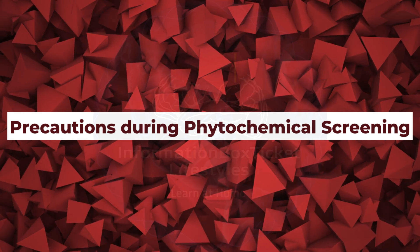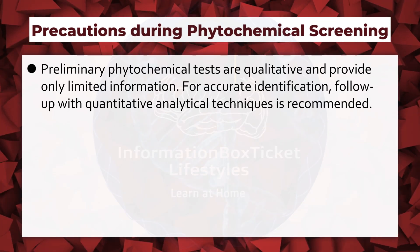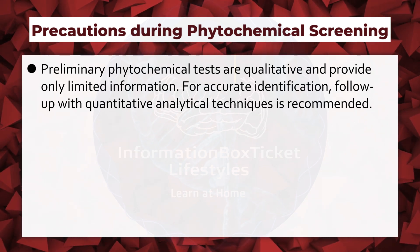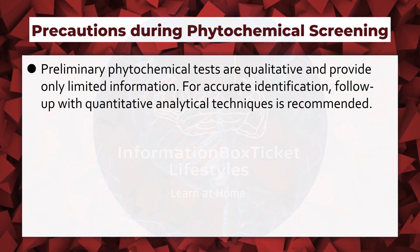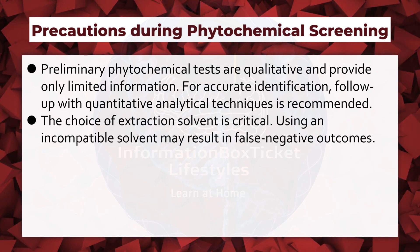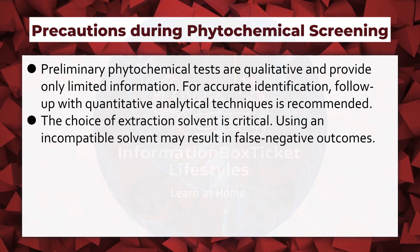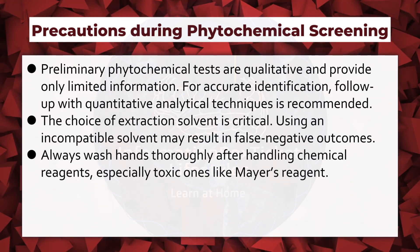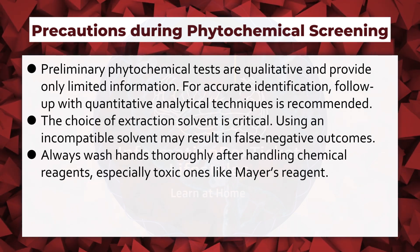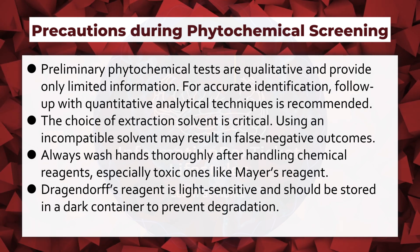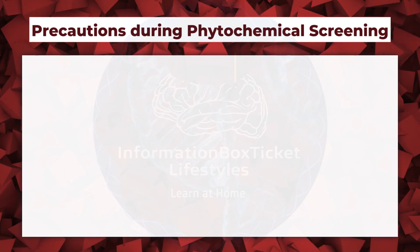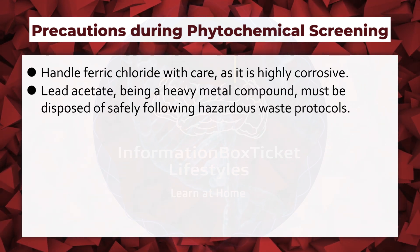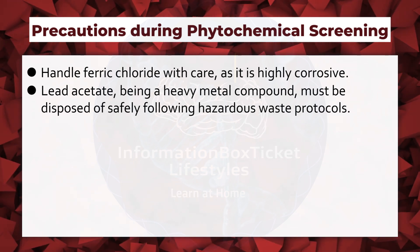Precautions During Phytochemical Screening. Preliminary phytochemical tests are qualitative and provide only limited information; for accurate identification, follow-up with quantitative analytical techniques is recommended. The choice of extraction solvent is critical — using an incompatible solvent may result in false-negative outcomes. Always wash hands thoroughly after handling chemical reagents, especially toxic ones like Mayer's reagent. Dragendorf's reagent is light-sensitive and should be stored in a dark container to prevent degradation. Handle ferric chloride with care as it is highly corrosive. Lead acetate, being a heavy metal compound, must be disposed of safely following hazardous waste protocols.